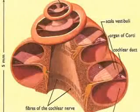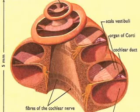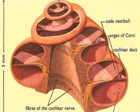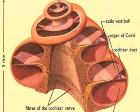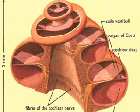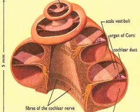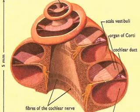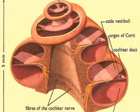Inside the cochlea, there are three sections: the scala vestibuli, the scala media, and the scala tympani. The organ of corti, which is where the hair cells are located, is here. The basilar membrane separates the scala tympani from scala media, and the Reisner's membrane separates scala vestibuli from scala media. The auditory nerve fibers and the spiral ganglion cells, which are located in this area, will take the sound information and send it to the brain via the auditory nerve.